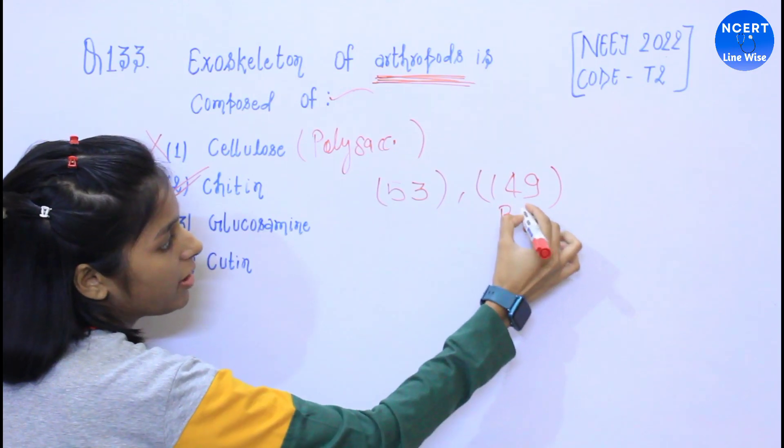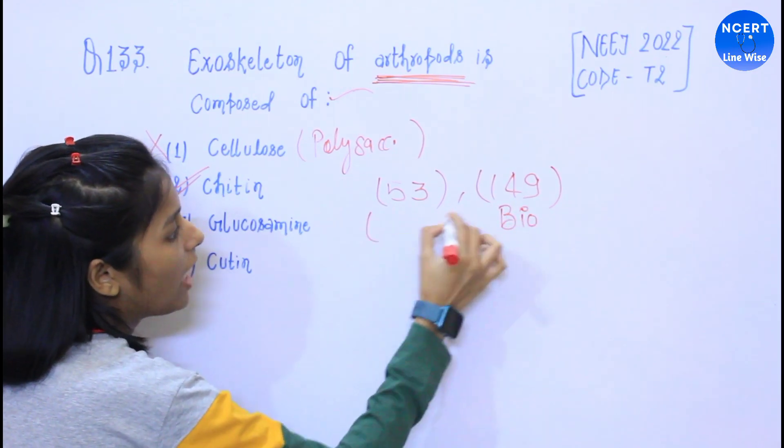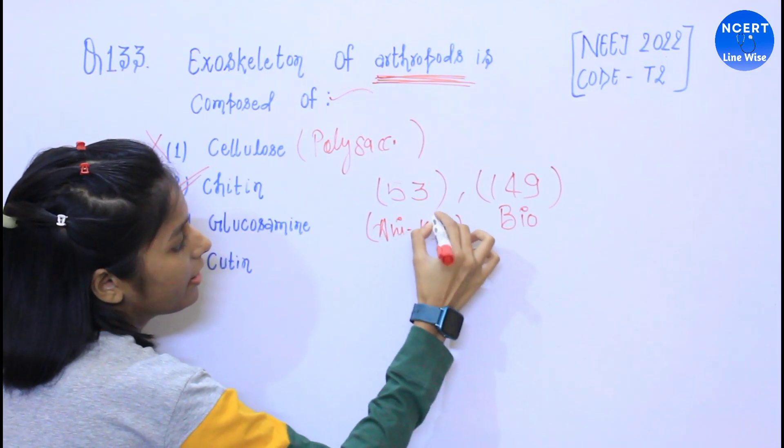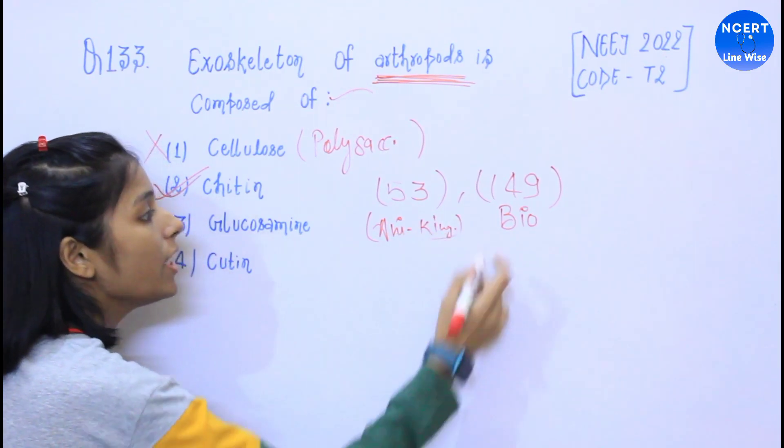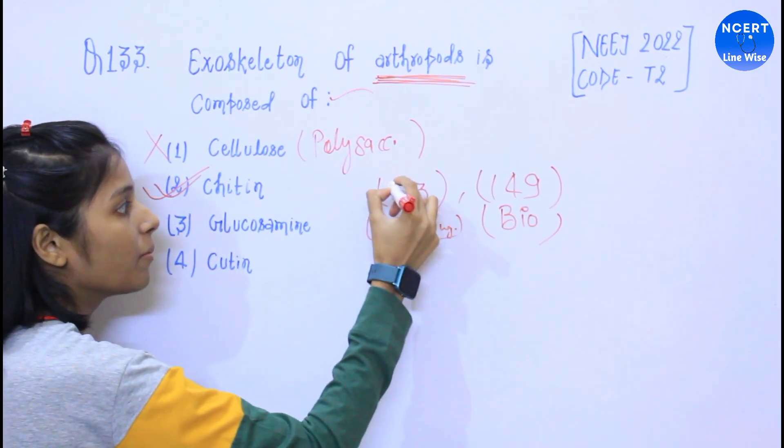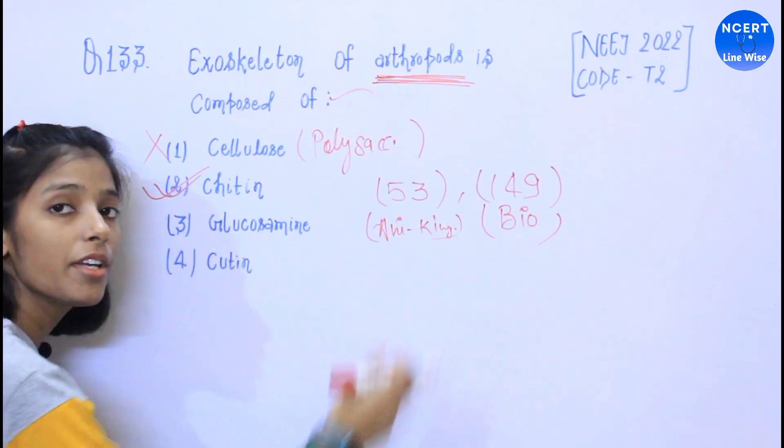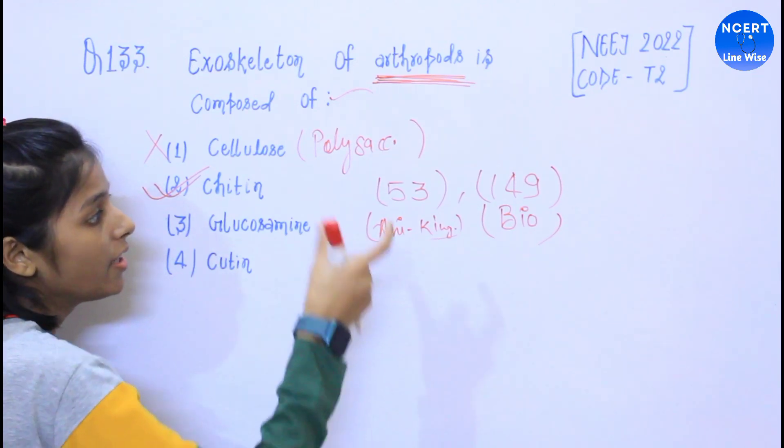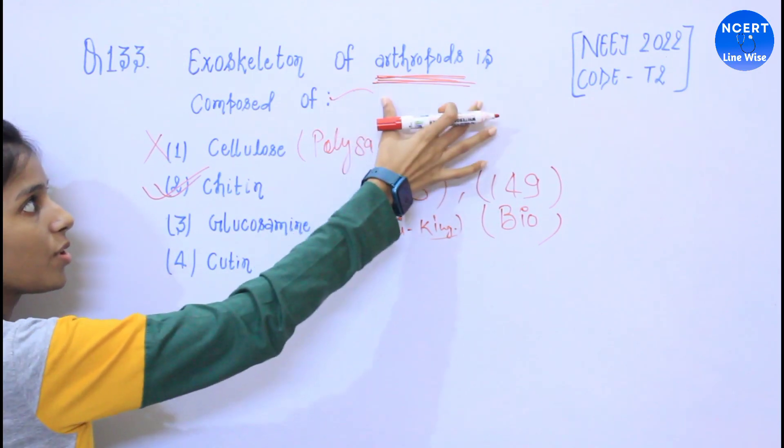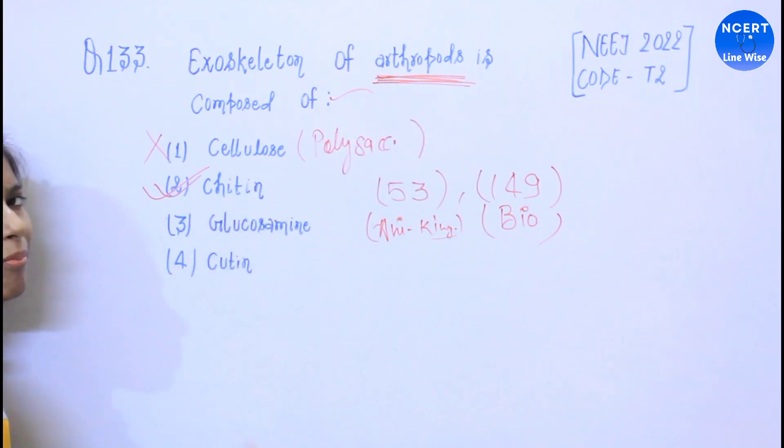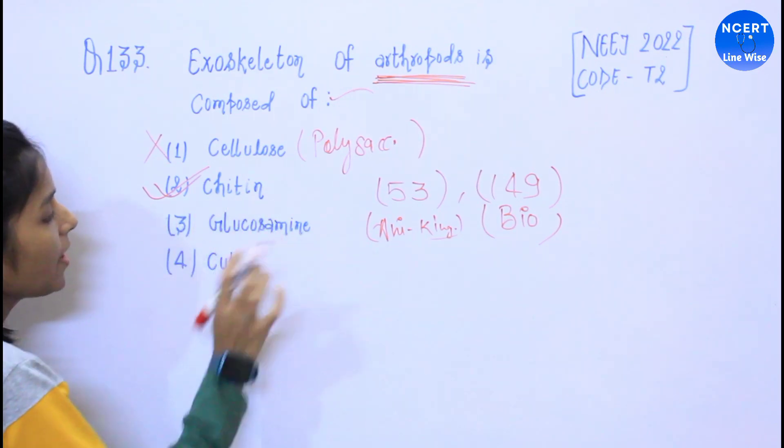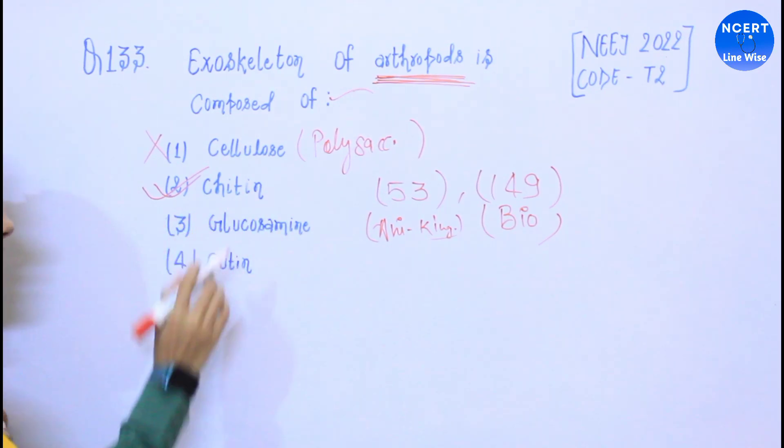Biomolecules, and here on Animal Kingdom. This is put in 149 and in 53 in Animal Kingdom. You have to put in the same page. You will see, you will totally understand. This question is very easy. This is the option, chitin.